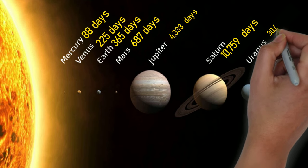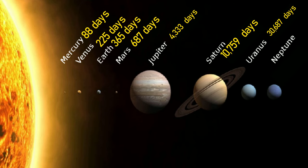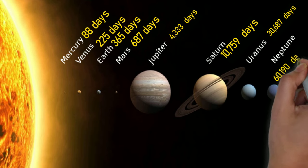Uranus 30,687 days, Neptune 60,190 days.